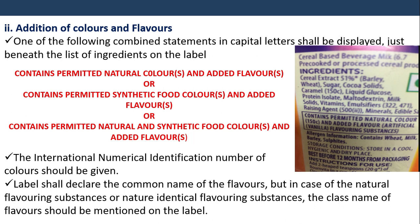For addition of both colors and flavors, one of the following combined statements in capital letters shall be displayed just before the list of ingredients on the label: 'Contains permitted natural colors and added flavors,' or 'Contains permitted synthetic food colors and added flavors,' or 'Contains permitted natural and synthetic food colors and added flavors.' The INS number of colors should be given. The label shall declare the common name of the flavors, but in case of natural flavoring substances or natural-identical flavoring substances, the class name of the flavors should be mentioned.